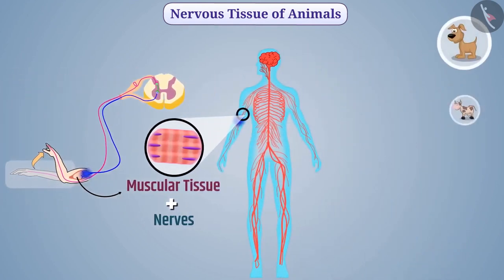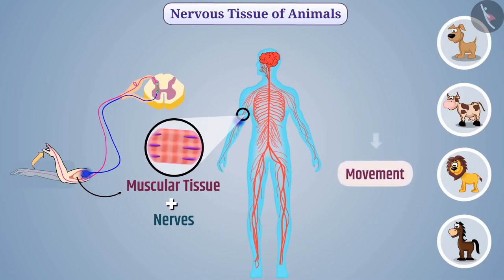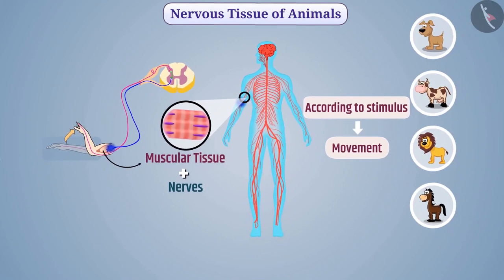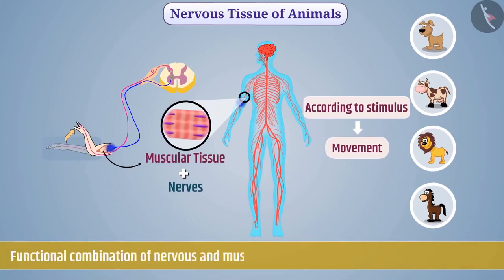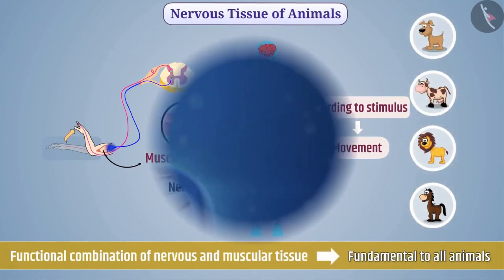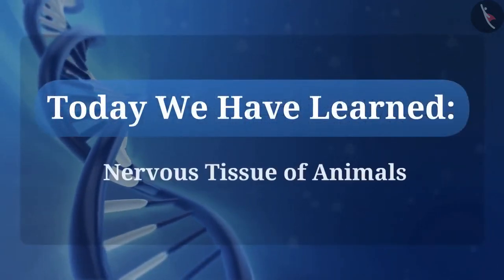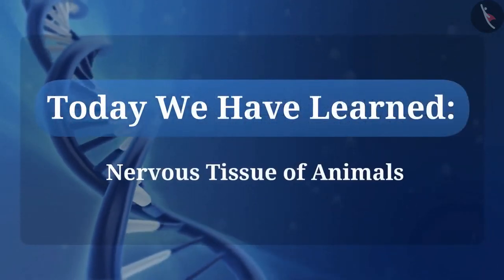In all animals, this type of combination provides movement according to stimulus. Therefore, the functional combination of nervous and muscular tissue is fundamental to all animals. So, today we have learned about the nervous tissue of animals.